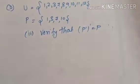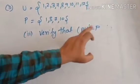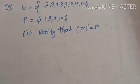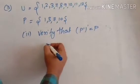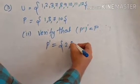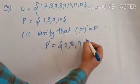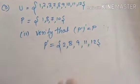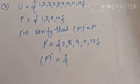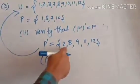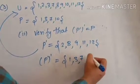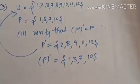Now the second part of the question: verify that complement of P complement is equal to P. First we find P complement, which is {2, 8, 9, 11, 12}. Now we find the complement of P complement by comparing P complement with U. 2 is there, 1 is not there, 3 is not there, 7 is not there, 10 is not there. So complement of P complement equals {1, 3, 7, 10}.